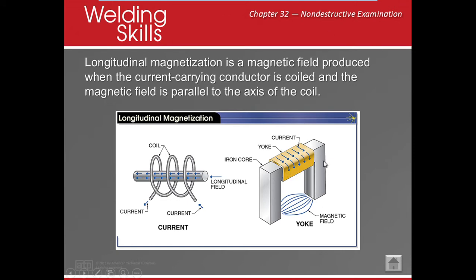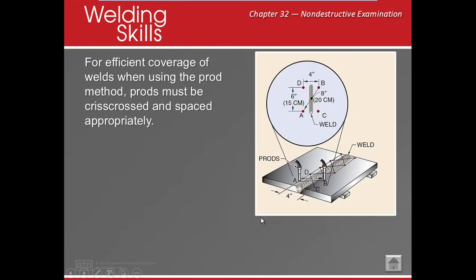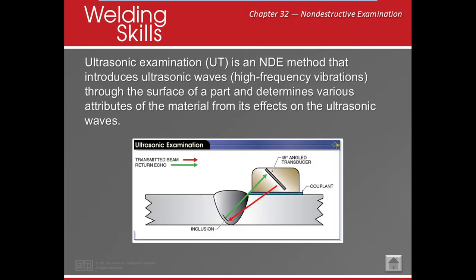The magnetic field is applied below the yoke to magnetize the piece. For efficient coverage, regardless of whether we're using prods or a yoke, the magnetization must be crisscrossed across the weld. If we only go in one direction, we will likely miss many discontinuities.